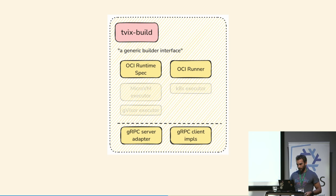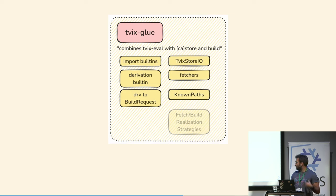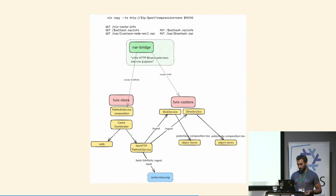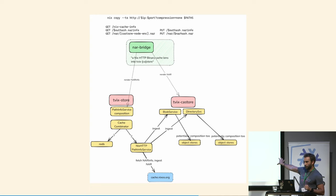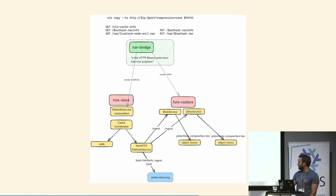Glue brings the import built-ins, the implementation that uses Tvix store, all the fetchers, and the known-path and derivation tracking to tie everything together. One combination is a Nix binary cache implementation that uses CA store to ingest from cache.nixos.org into Tvix store and CA store, and then serves you back a NAR. You can use this for deduplicated storage of binary cache data. This has been deployed at BornHack a few months ago, and I want to deploy it in the future for cache.nixos.org to test the system better and store things more densely.